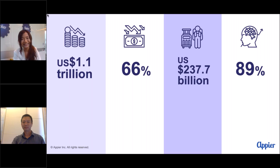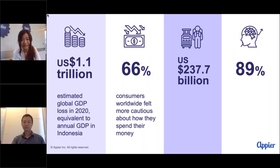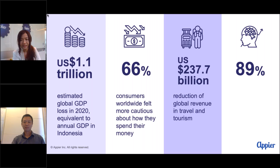On this slide there are four key numbers. First: US $1.1 trillion — the estimated global GDP losses in 2020 related to COVID, equal to the annual GDP of Indonesia. Second: 66% — 66 percent of consumers worldwide feel they are more conscious about how they spend their money. Third: US $237.7 billion — the reduction in global revenue from travel and tourism lost during this pandemic. And lastly: 89 percent.